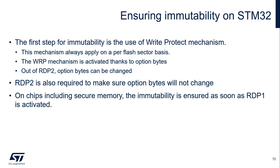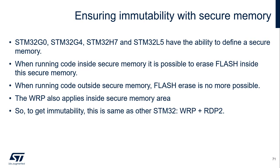We have talked about how to ensure the unique boot entry on STM32. Now let's look at how to ensure immutability on STM32. The first step for immutability is the use of a write protection mechanism. This mechanism always applies on a per flash sector basis, and the WRP mechanism can be activated by option bytes. However, option bytes can be modified if RDP is not at level 2, so RDP level 2 is also required to ensure option bytes will not change. STM32 G0, G4, H7, and L5 have the ability to define a secure user memory.